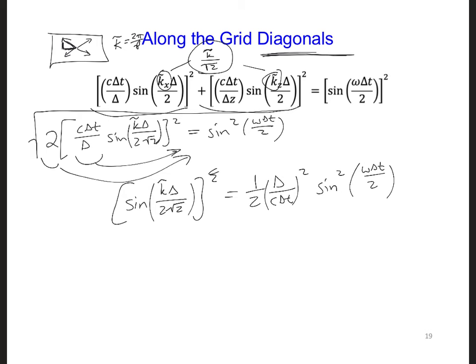So now if we take the square root, this goes away, this goes away, this goes away, and we get square root of 1 half. So now it's a little easier to solve for k. So we get 2 square root of 2 over delta, arc sine delta over c delta t square root of 2, and then sine omega delta t over 2.